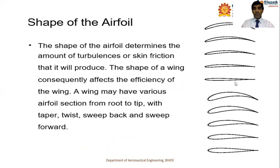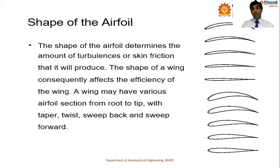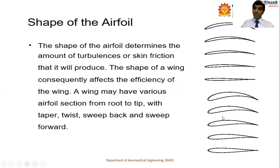There are different shapes of airfoils depending on the operation, speed, and Mach number — their thickness varies accordingly. The shape of the airfoil determines the amount of turbulence or skin friction produced, which consequently affects the efficiency of the wing. A wing may have various airfoil sections from root to tip, with taper, twist, sweep back, and sweep forward. The thickness of the airfoil varies from very thin at the top to thicker sections lower down.